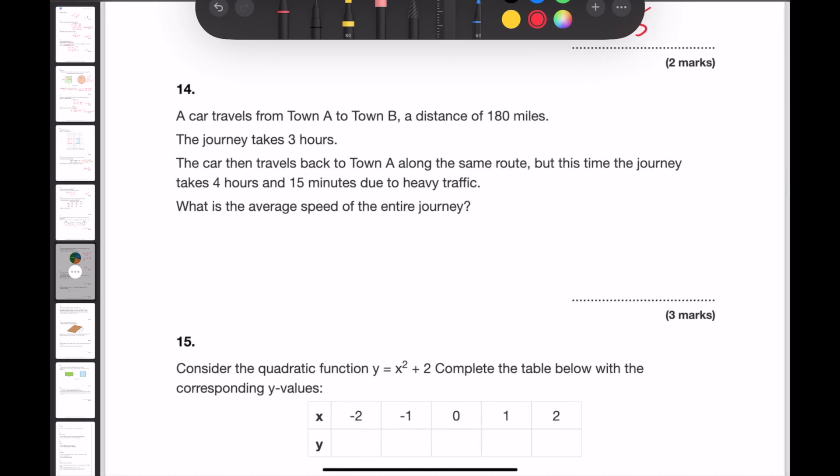Question 14. A car travels from town A to town B a distance of 180 miles. The journey takes 3 hours. The car then travels back to town A along the same route. But this time the journey takes 4 hours and 15 minutes due to heavy traffic. What is the average speed of the entire journey? To have gone from town A to town B, the car would have travelled 180 miles. And to have then returned back to town A, it would have travelled another 180 miles. This means that altogether the car has travelled 360 miles.